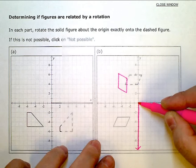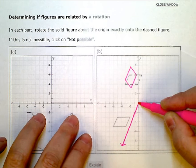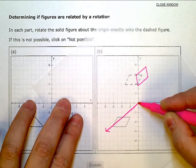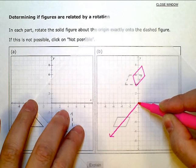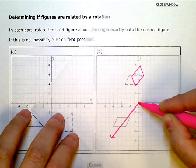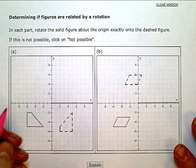I want to know, can I make the solid and the dashed exactly line up? You can see that no matter where I put the solid one, it's never going to line up with that dashed one. So this one is not possible.